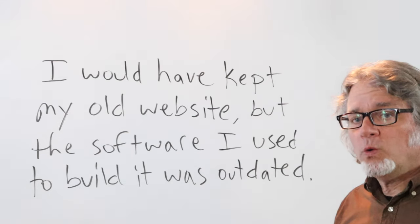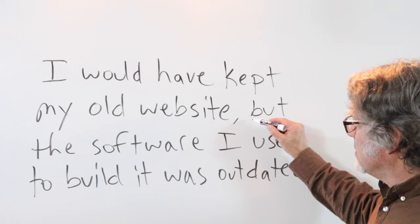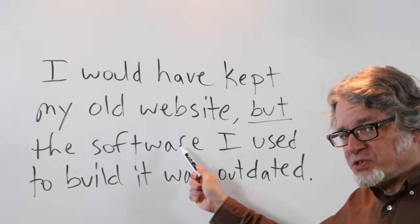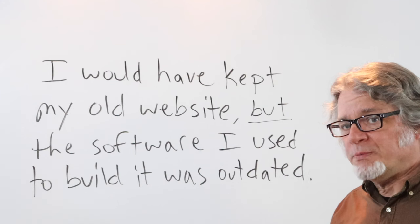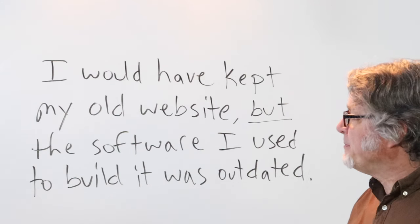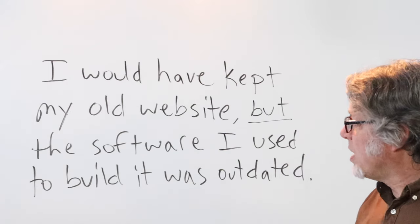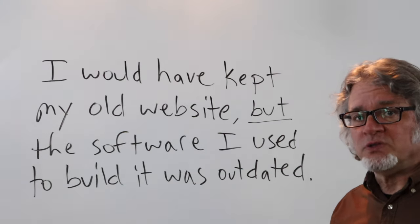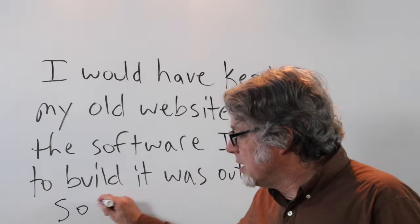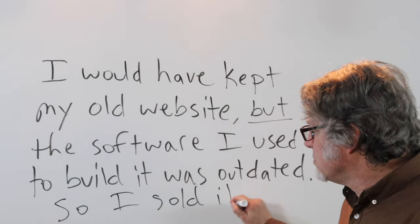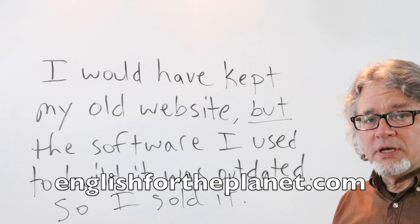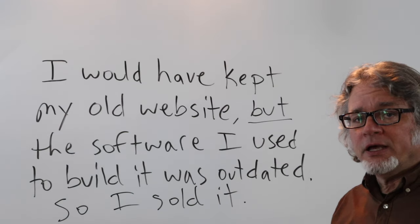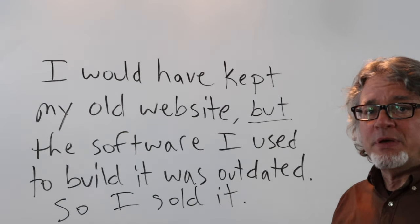I would have kept my old website — and here's a conjunction that starts the next part of the sentence, explaining why I didn't keep my old website. I would have kept my old website, but the software I used to build it was outdated, so it was difficult to work on. So I sold it and now I have a new website, English for the Planet. I hope you visit there regularly, especially if you're interested in basic English grammar.